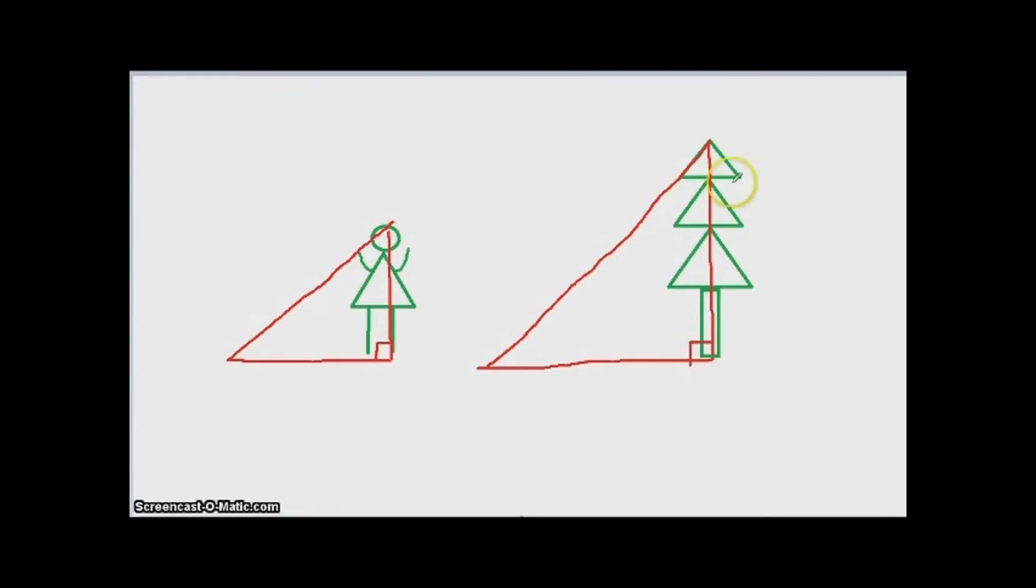The tree and tree's shadow and the sun ray of the tree form another right triangle. So, what is the relationship between these two right triangles? The answer is they are similar. Why are they similar? According to triangle similarity theory,